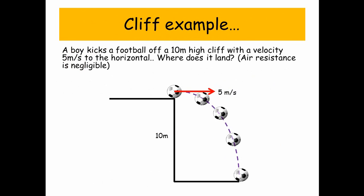Okay, let's look at a cliff example. A boy kicks a football off a 10 meter high cliff with a velocity of 5 meters per second to the horizontal. So where does the ball land? Now, one thing that's nice about these kind of problems is that air resistance is negligible. So in the horizontal plane, the ball's going 5 meters per second all the time. We don't need to worry about any changes in the horizontal plane. The only plane we need to really be concerned about is the vertical.